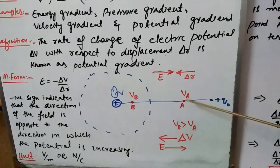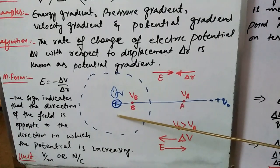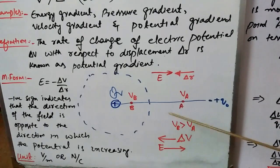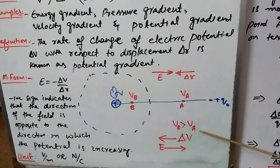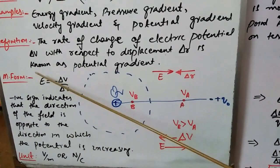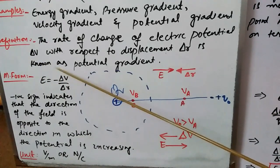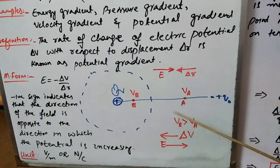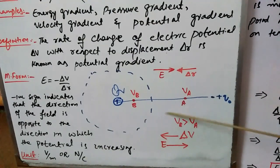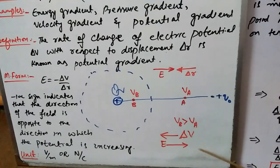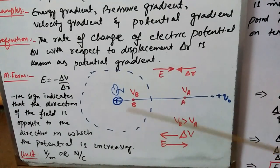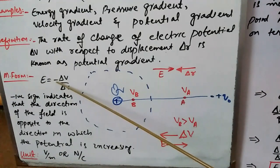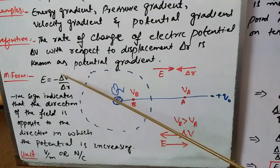Since point B is nearer to the source charge, the electric potential at point B is higher than at point A — potential at B is greater than potential at A. The negative sign in the formula indicates that the direction of the electric field and the direction of increasing potential are in opposite directions. The direction of the electric field points away from the source, while the direction of increasing potential points toward the source.